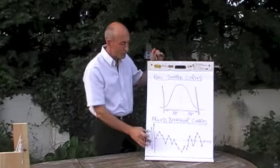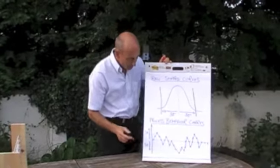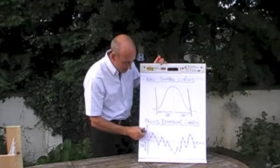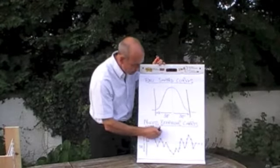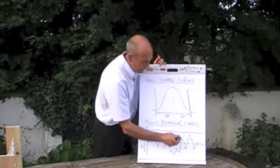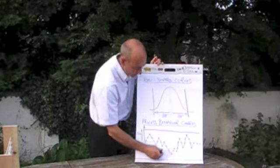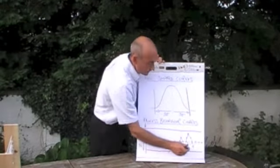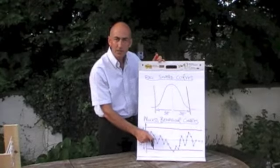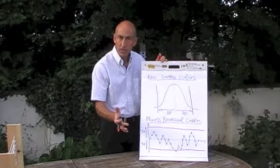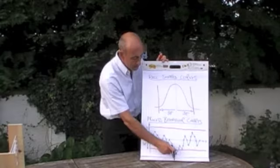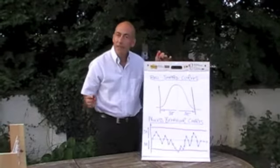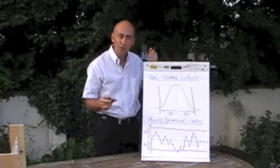We're going to talk more about process behaviour charts, and we're going to put on limits at 3 sigma, exactly the same. Everything that's inside these limits is common cause variation, and everything that's outside—we've got a little point down here—that's special cause variation.